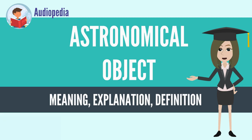Examples of astronomical objects include planetary systems, star clusters, nebulae, and galaxies, while asteroids, moons, planets, and stars are astronomical bodies.